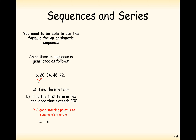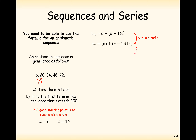Here a is the starting term and d is the common difference. We can see we're adding on 14 each time, and you can check all the way down the sequence. So d equals 14 — that's what makes it an arithmetic sequence because it has a common difference. Substituting a and d into the formula, we get 6 plus (n minus 1) times 14, which simplifies to 14n minus 8.